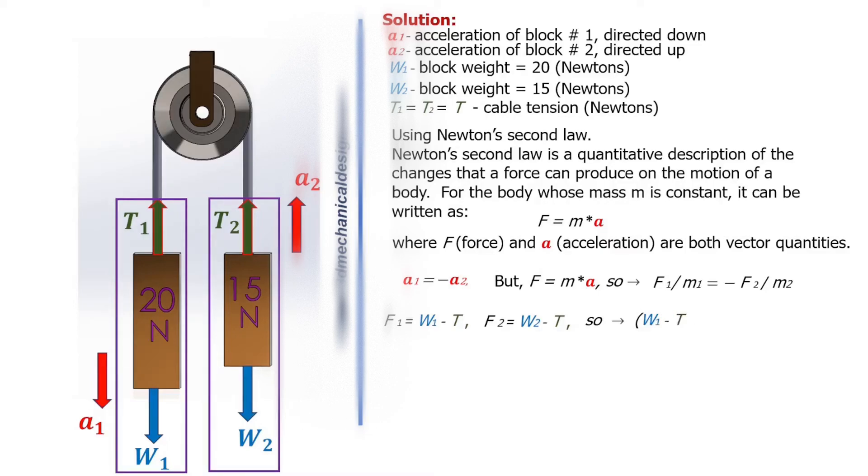So W1 minus T divided by m1 equals minus W2 minus T divided by m2.